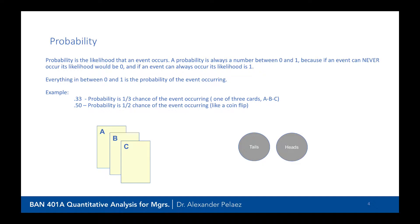For example, a 0.33 probability — a one-third chance — is synonymous with having three cards and choosing one at random. The likelihood of choosing card A is the same as choosing B or C, each having a one-third chance. Similarly, if we have a coin flip, the probability is one-half, or 50% (0.50), that we would get tails or heads.